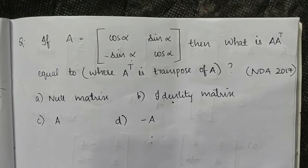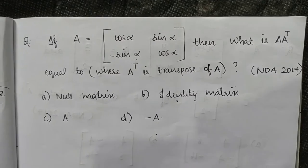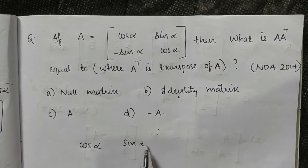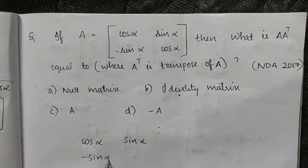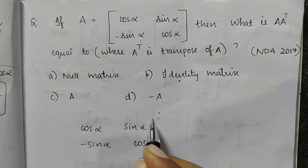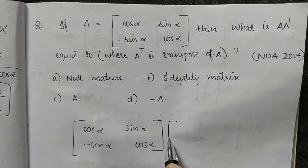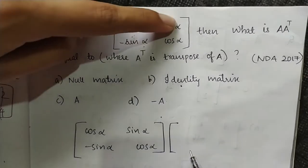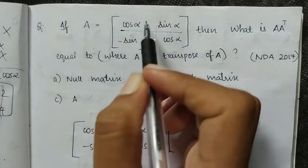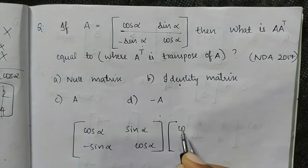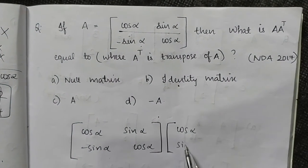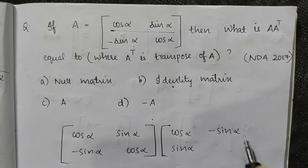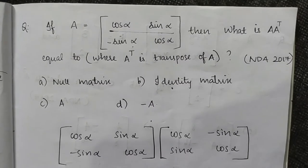Let's find A transpose. A is [[cos alpha, sin alpha], [-sin alpha, cos alpha]]. To find A transpose, we interchange rows and columns. So the first row becomes the first column. A transpose becomes [[cos alpha, -sin alpha], [sin alpha, cos alpha]].